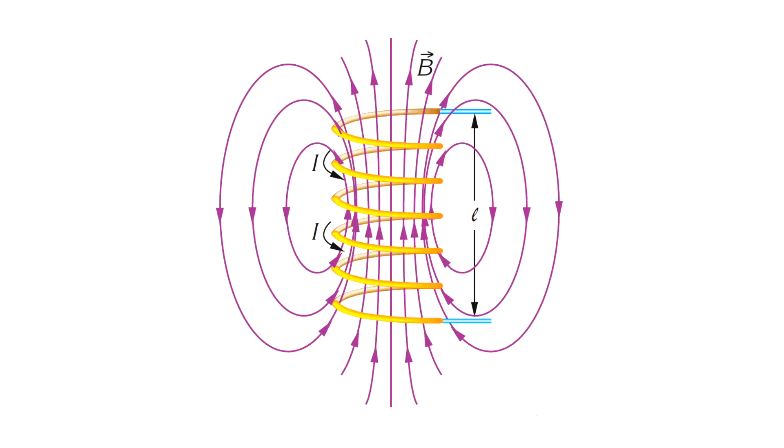The magnetic field lines inside the coil are uniformly distributed and parallel to the axis of the coil. The field outside the coil is non-uniform and weak.